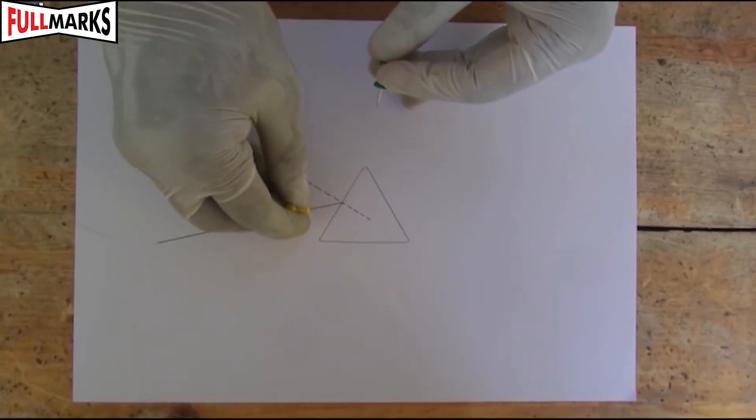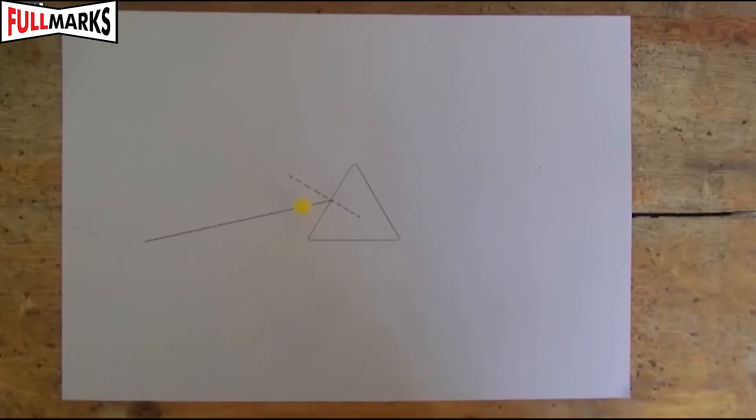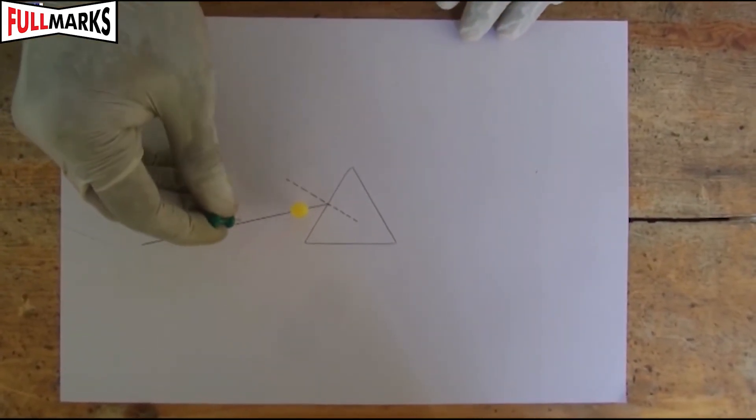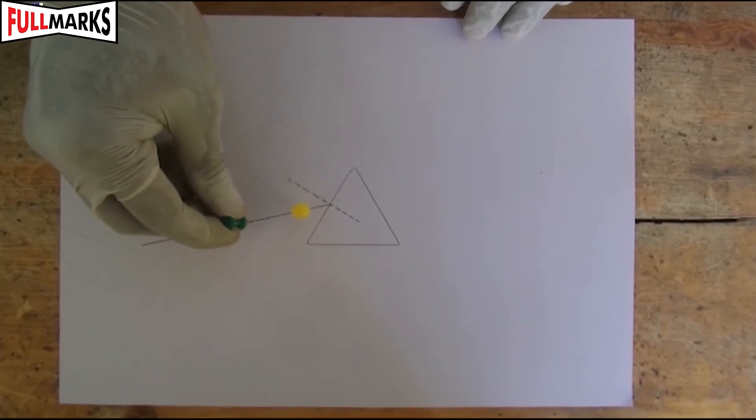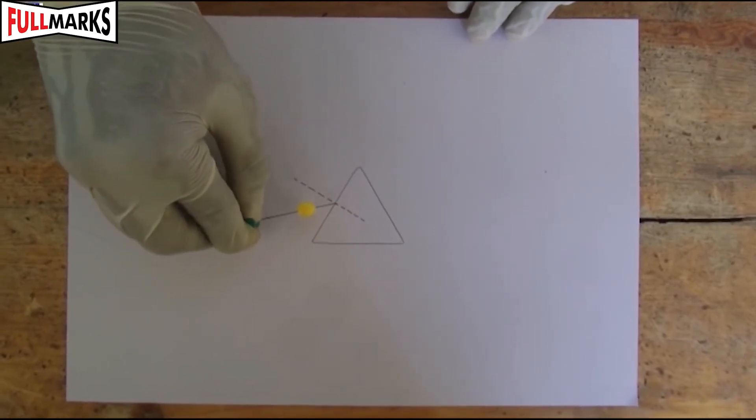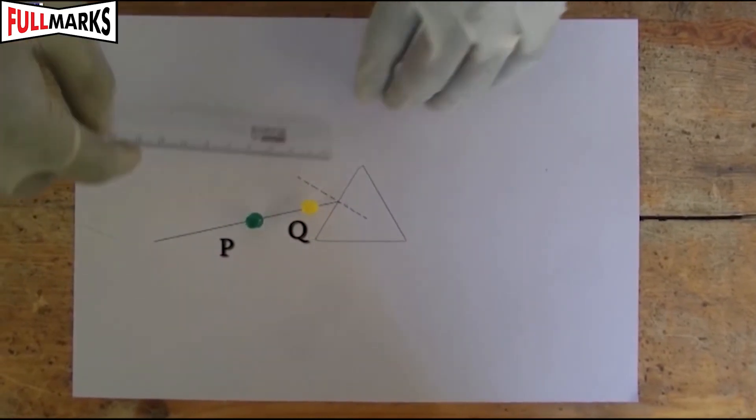Fix two pins at a distance of 5 cm from each other on the line PI as shown in the figure. Later, mark these points of pins as P and Q.